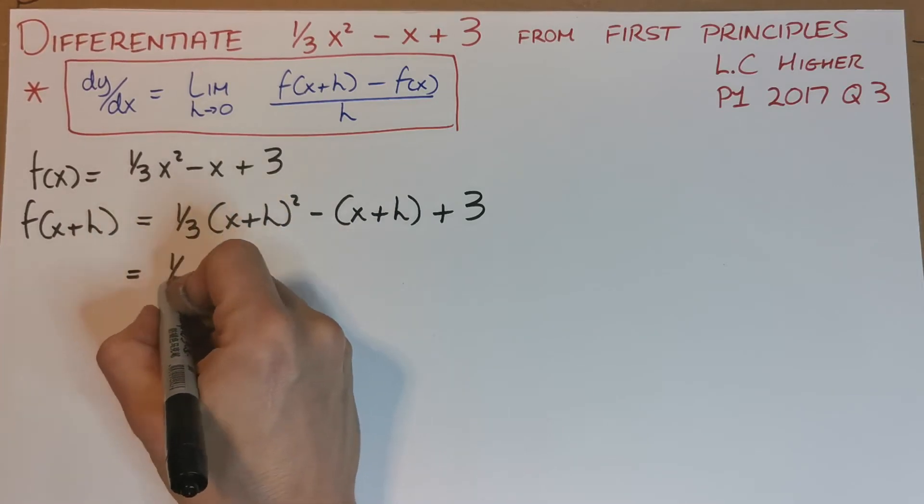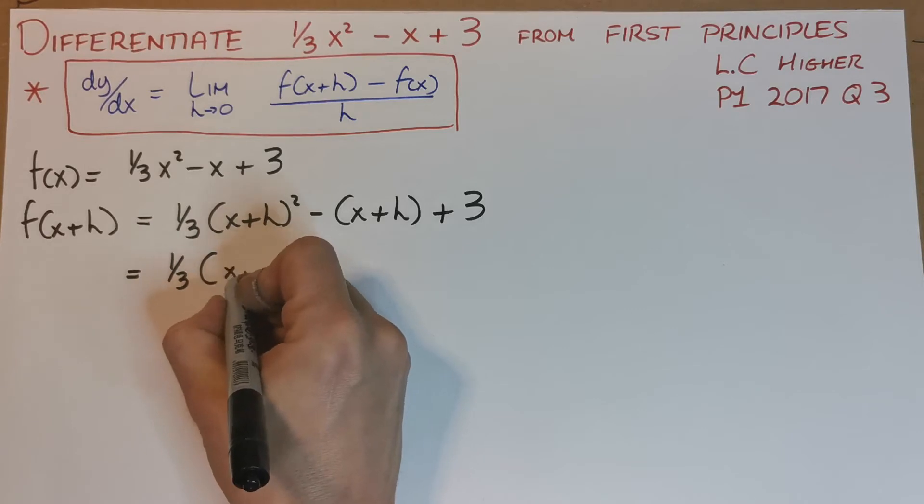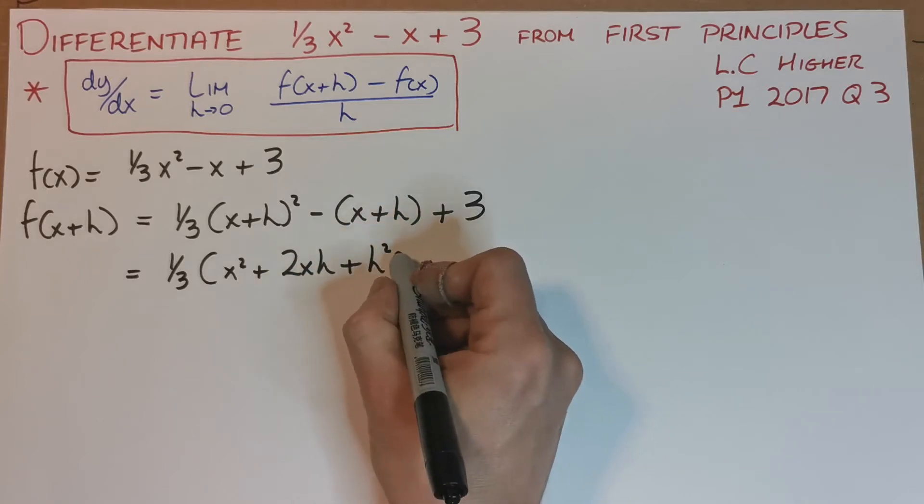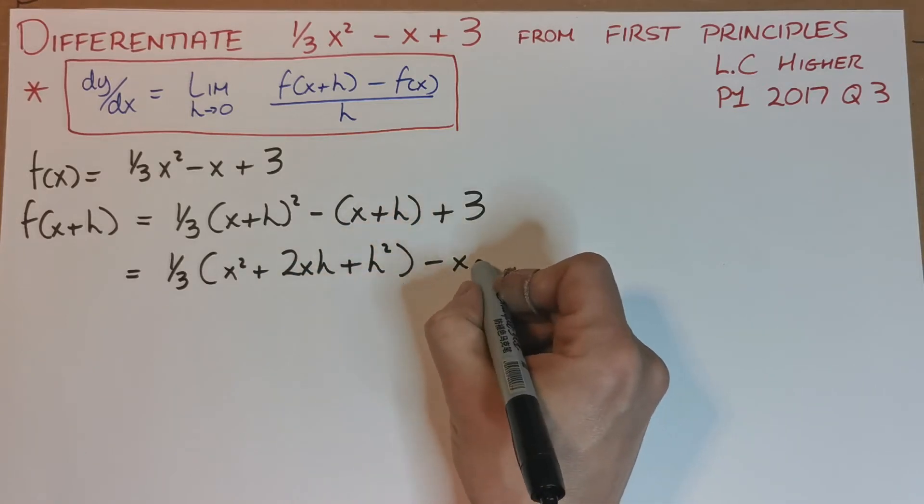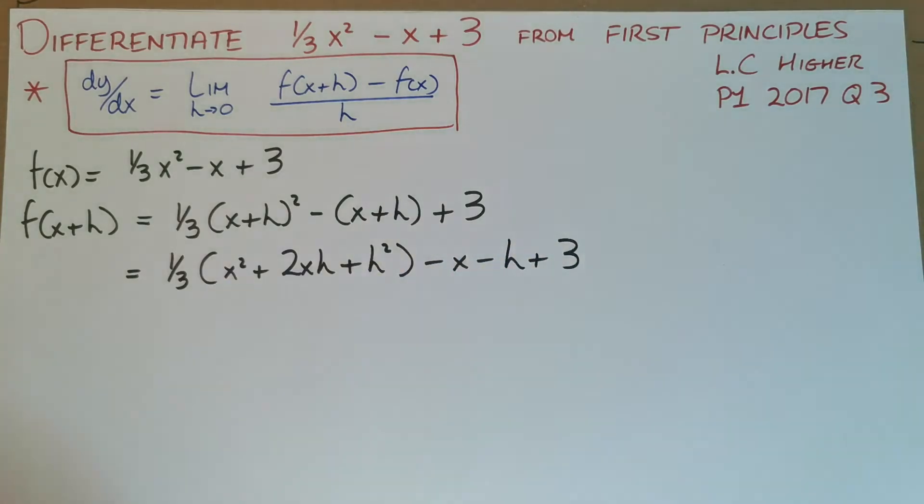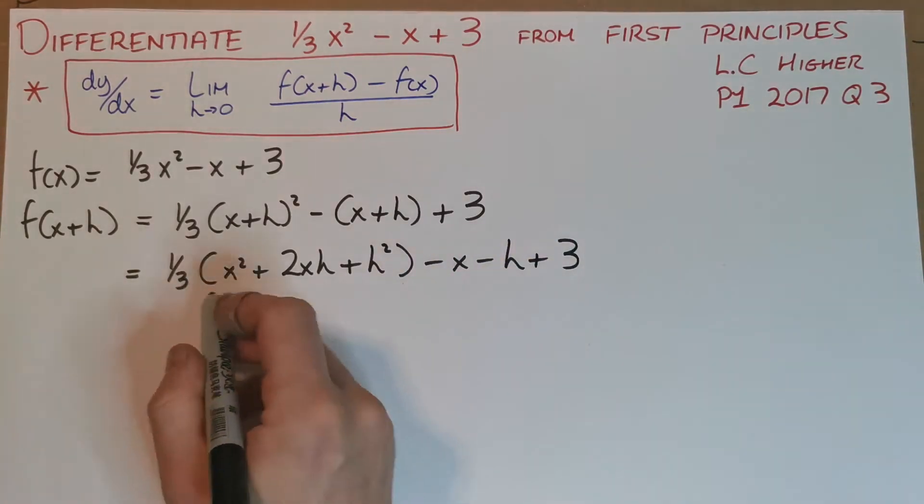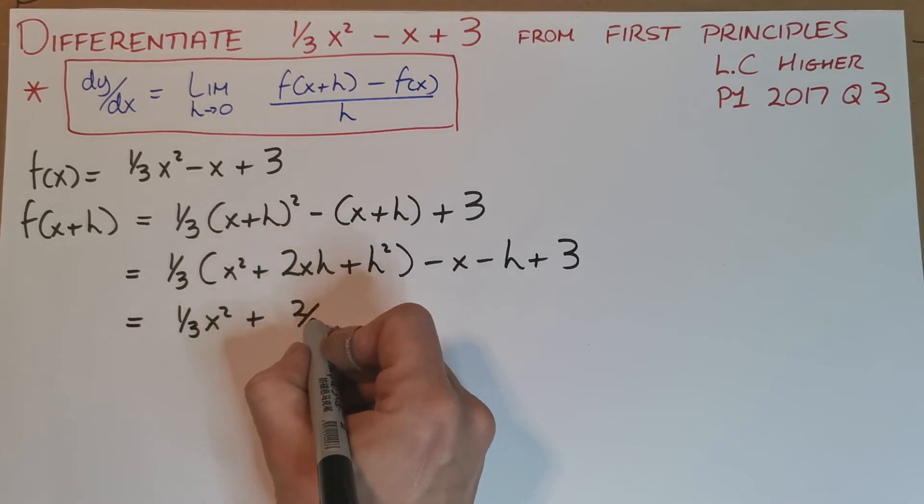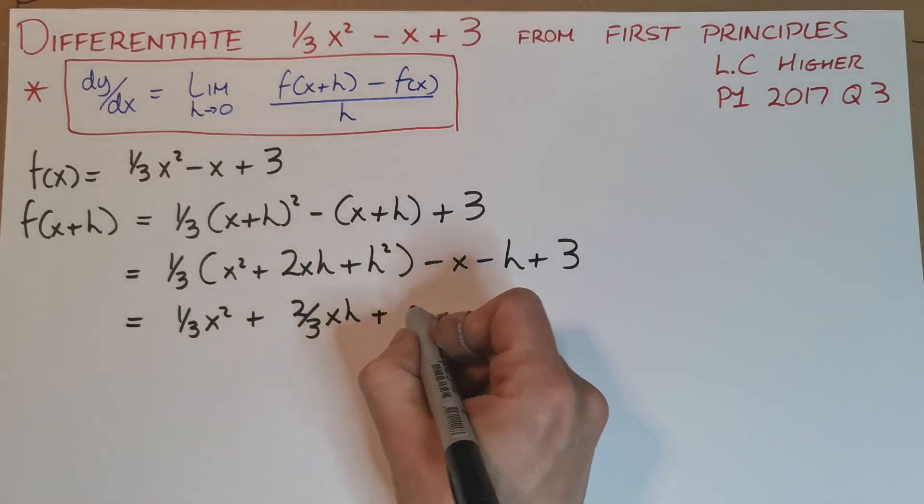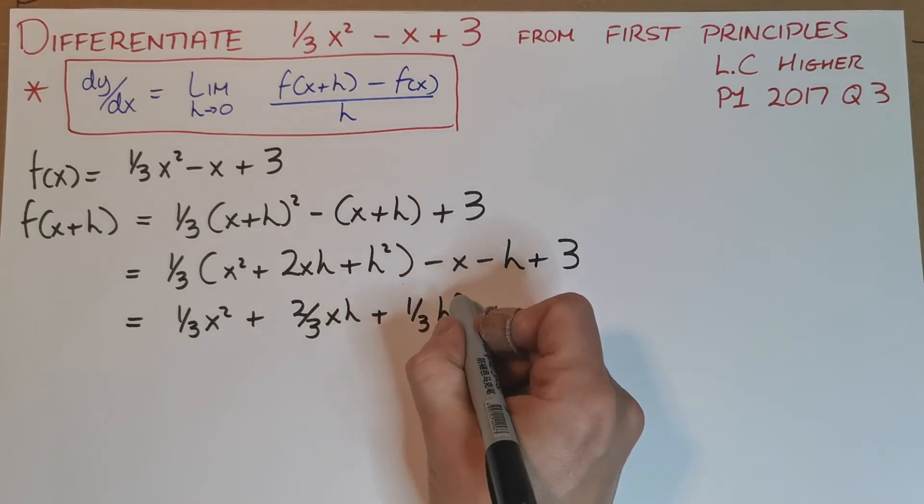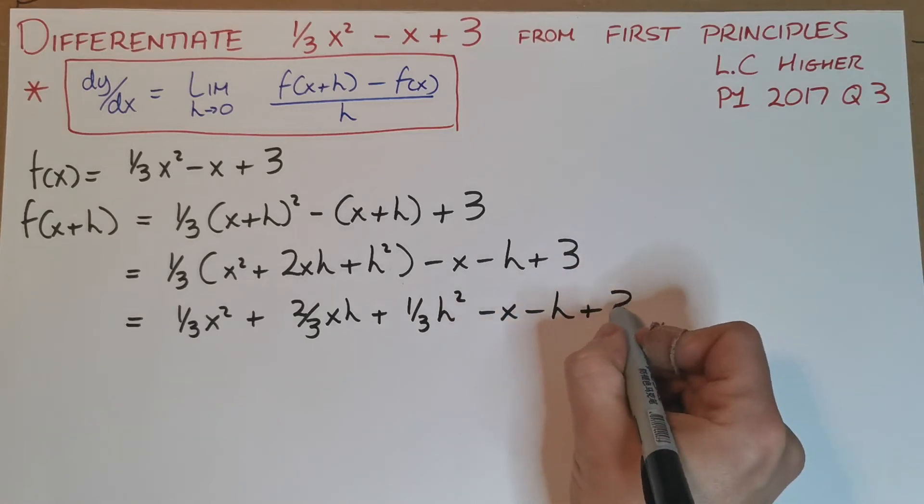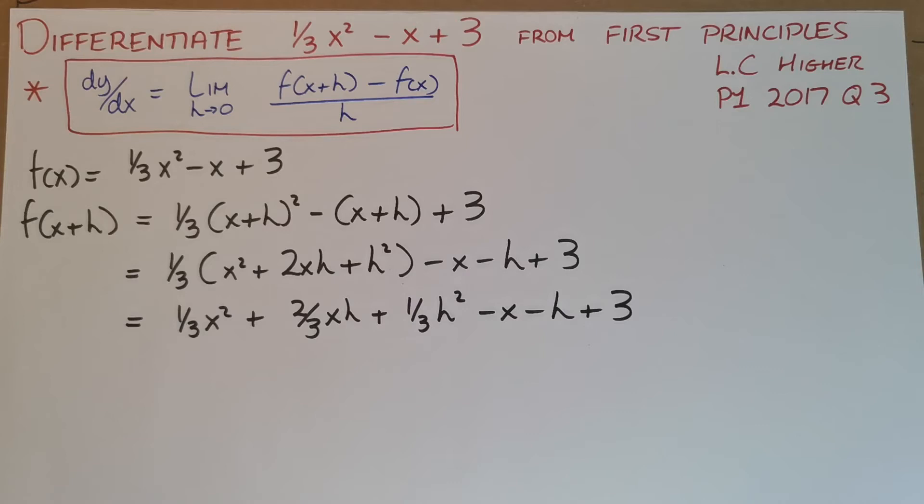Let's tidy this up a bit and expand it. I'm left with (1/3) and that is x² + 2xh + h² minus x minus h and plus 3. Since a third affects everything here, let's actually just put that in. It might make it a bit easier. So (1/3)x² and then plus (2/3)xh plus (1/3)h² minus x minus h and then a plus 3 on the outside there.